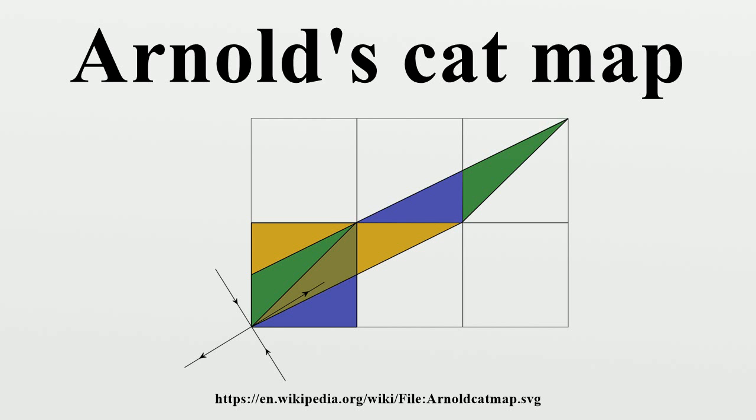When n is set to an integer value, the position and momentum variables can be restricted to integers, and the mapping becomes a mapping of a toroidal square grid of points onto itself. Such an integer cat map is commonly used to demonstrate mixing behavior with Poincaré recurrence utilizing digital images. The number of iterations needed to restore the image can be shown never to exceed 3n.